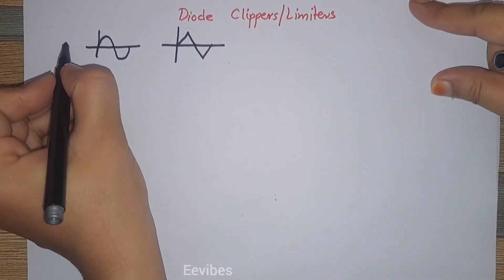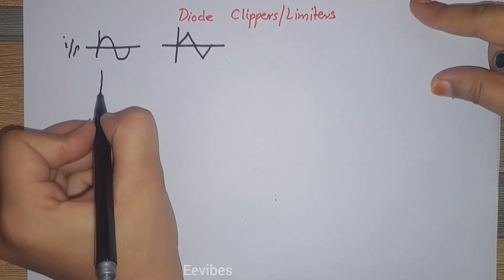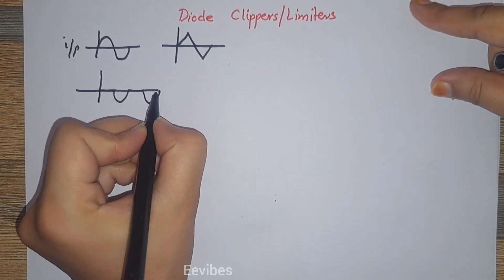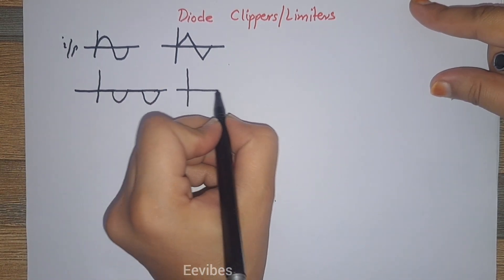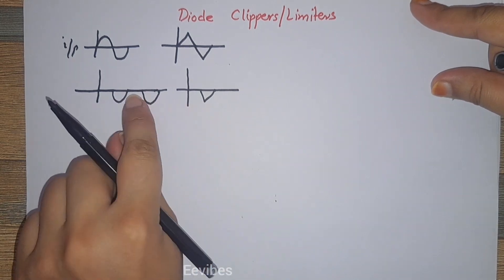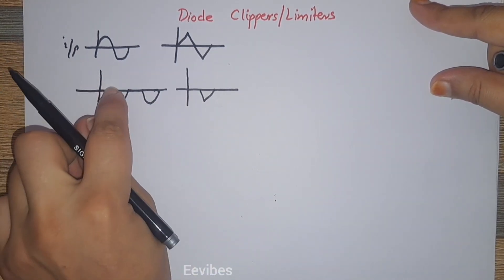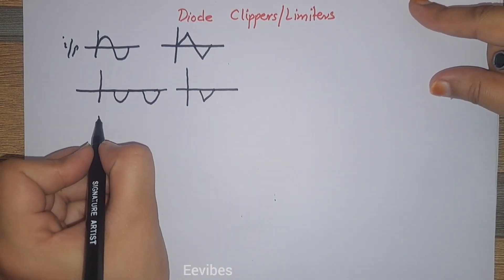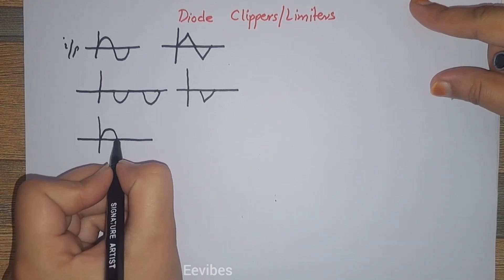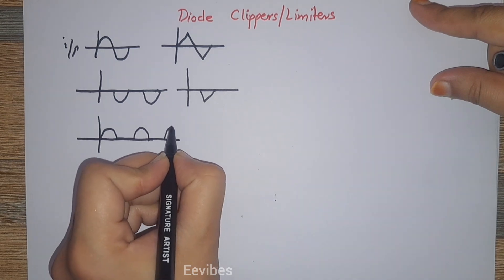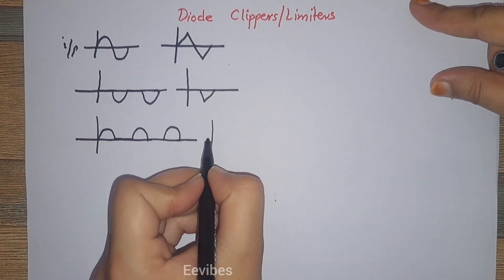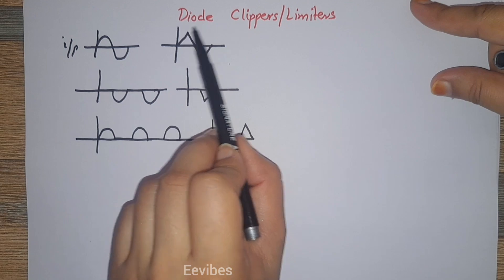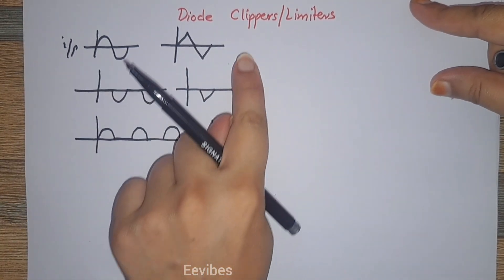If the input is sinusoidal and the clippers eliminate the positive part of the input waveform so that only the negative portion of the input cycle is present, then such types of clippers are called positive clippers — because the positive portion is actually removed at the output side. Similarly, if the input signal is sinusoidal and you are only getting the positive cycles at the output waveform, then such types of clippers are known as negative clippers.